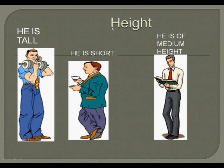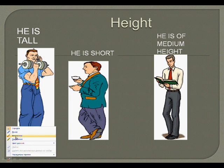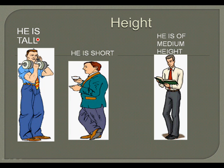When we speak about appearances, first of all we speak about the person's height. We say the person is tall or he is short, and if he is neither tall nor short we say he is of medium height.